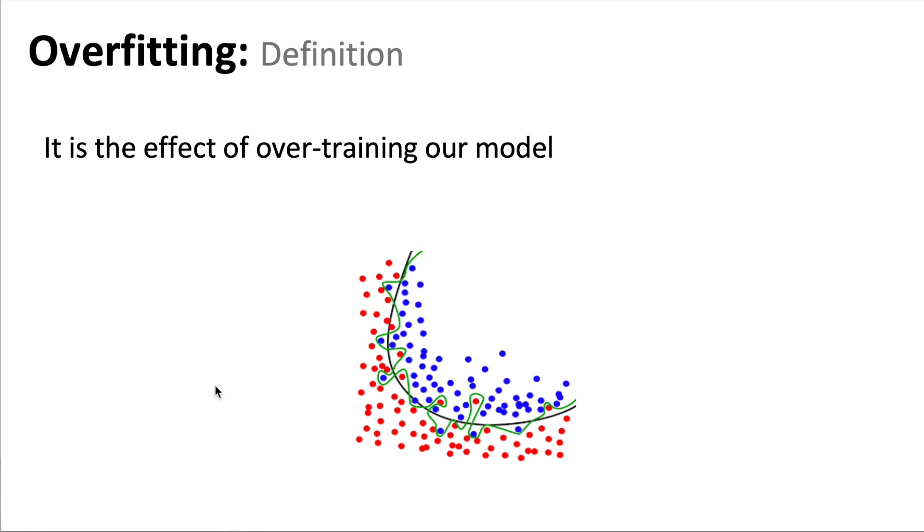One classifier model is the black line that tries to separate between the two classes. And then we have another classifier that is the green one that also tries to separate between both classes.